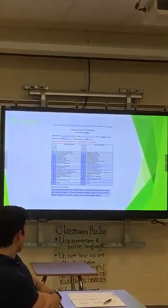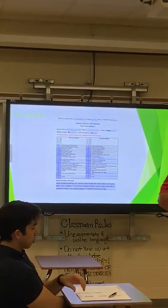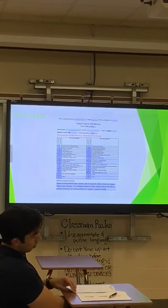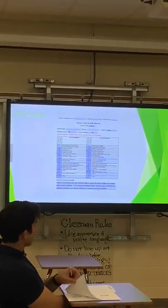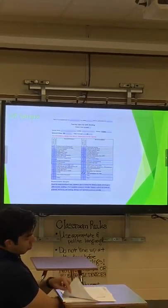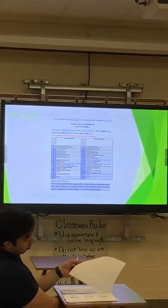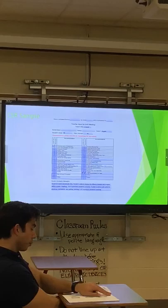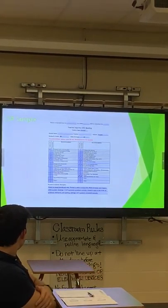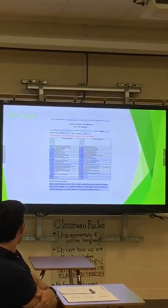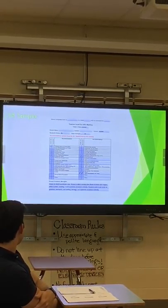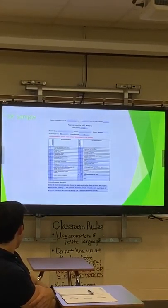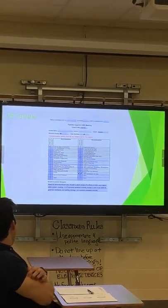Now, a sample of the CSR — it's on your paper. This is your way of telling us what the kids need inside your class. The bottom section says: 'Based on recent benchmark data, a student is able to analyze the effects of fiction and imagery within a poem — four out of five questions answered correctly. Student is able to edit drafts for grammar, mechanics, and spelling — two out of three questions answered correctly.' That's what you're looking for: detailed data on where the student is at that time.